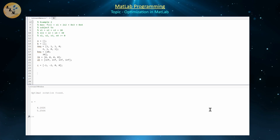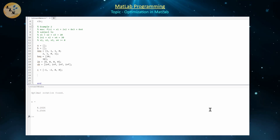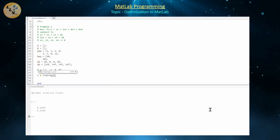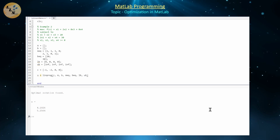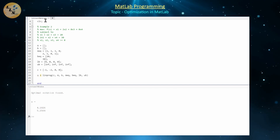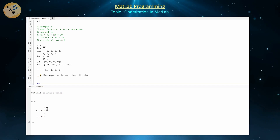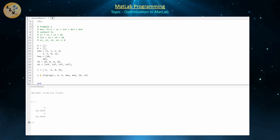With everything defined, we use LINPROG with arguments C, A, B, Aeq, Beq, LB, UB. Note there's a CLC at the top to avoid conflating results from the previous example. Running this gives the optimal solution: the function is maximized when x1 = 0, x2 = 20, x3 = 0, and x4 = 10. That's the solution to this linear programming problem.